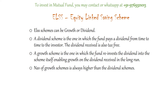SIP investments into ELSS schemes can be of two types: either a growth scheme or a dividend scheme. A dividend scheme pays a dividend from time to time to the investor, and the dividend received is tax free. A growth scheme reinvests the dividend back into the scheme itself, enabling growth on the dividend received in the long run. The returns from growth schemes are always higher than from dividend schemes.